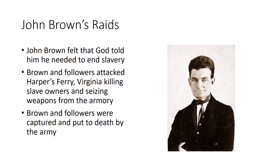Many people disagreed with the idea that African Americans were no more than property. An example was John Brown, an abolitionist who felt that God told him he needed to end slavery — and he did so by acting violently. He took part in the fights during Bleeding Kansas, and at one point he and his followers attacked Harpers Ferry, Virginia, killing slave owners and seizing weapons from the armory. Eventually, Brown and his followers were captured and put to death by the army. However, John Brown remains a martyr — someone who died for the cause of ending slavery.